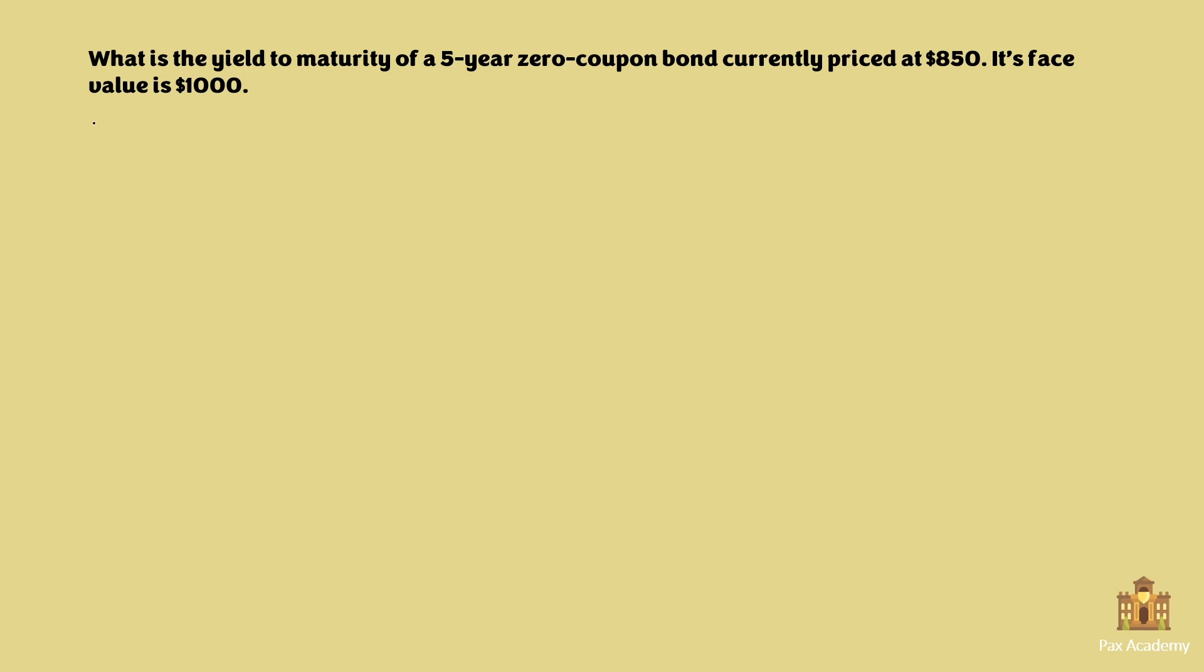Let's write down what we know. Firstly, we know it's a five-year zero coupon bond, therefore n is going to be five. The current market price P is eight hundred and fifty, and the face value is a thousand dollars.